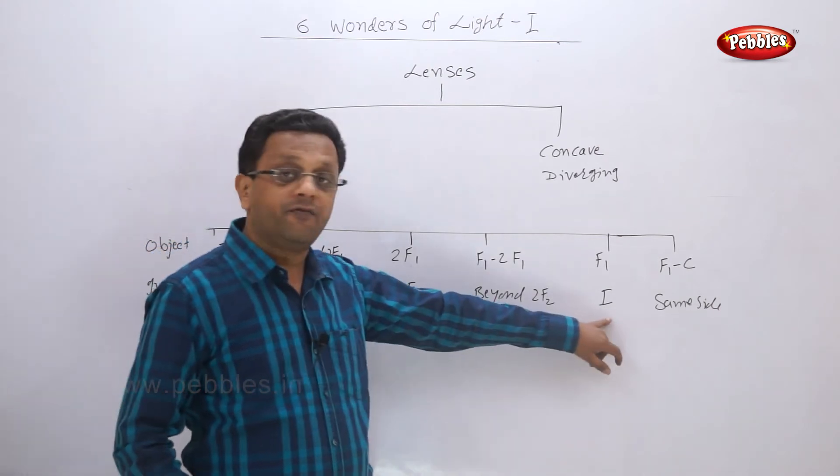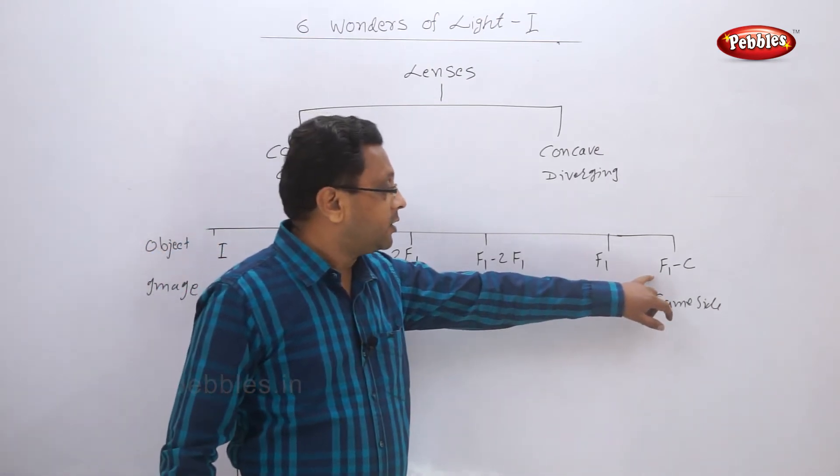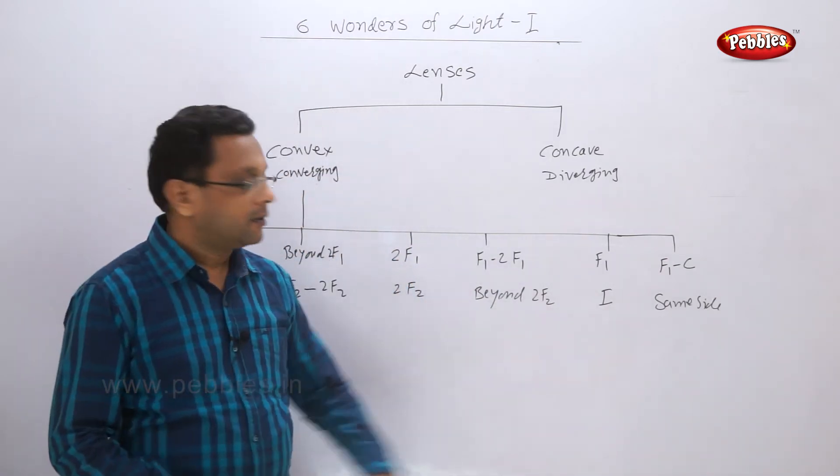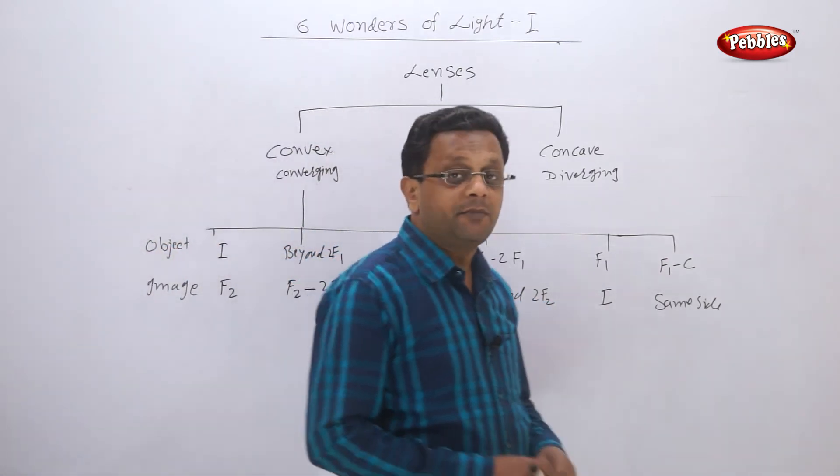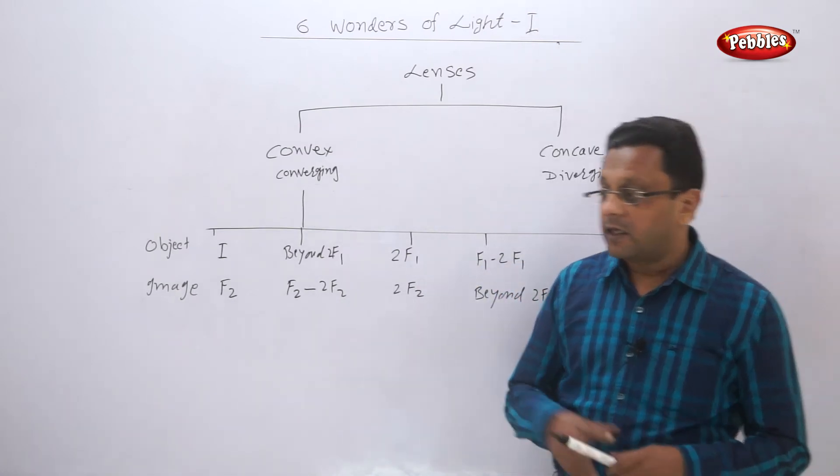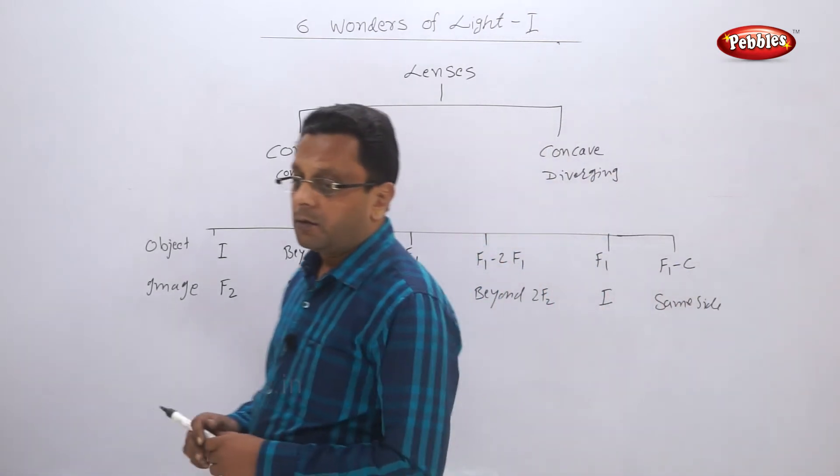When the object is placed between F1 and C, the image will be on the same side of the lens. Then we have seen the defects or the problems in vision.